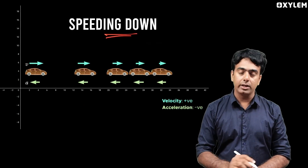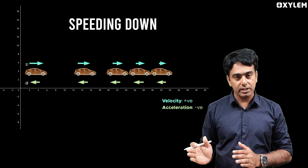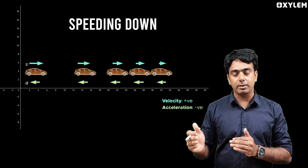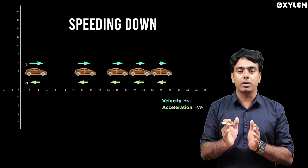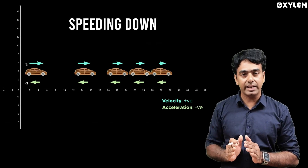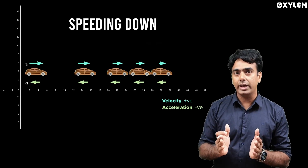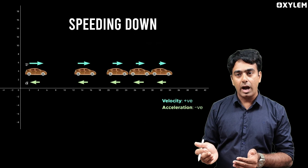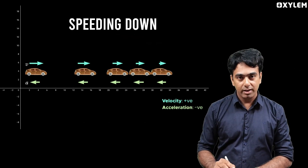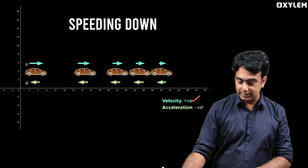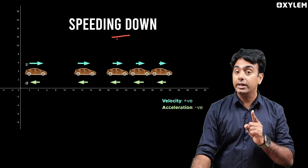Next example: speeding down. Speeding down, again in the positive x direction, the velocity is less — it decreases over time. Because the later velocity is less than the earlier velocity, the result is negative. Therefore, acceleration is negative. So this is speeding down, which is what deceleration is. The velocity is positive but acceleration is negative — that is deceleration.